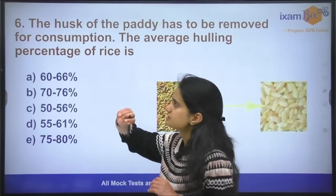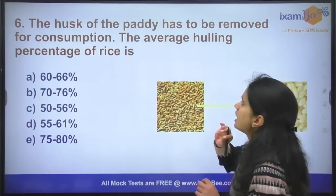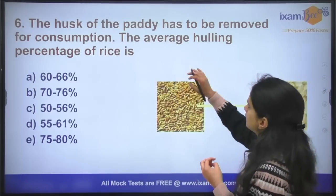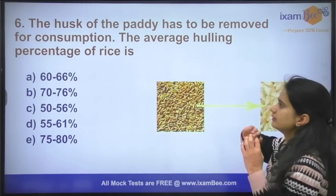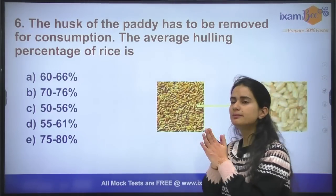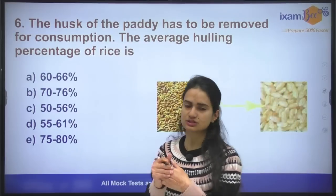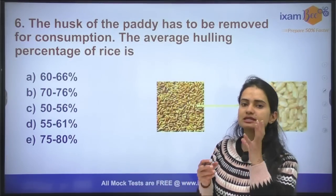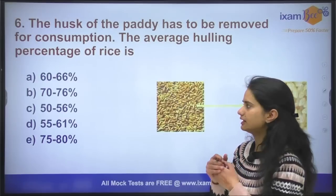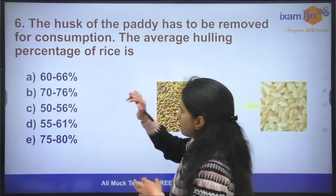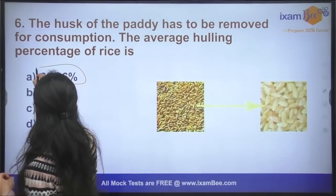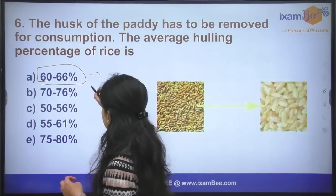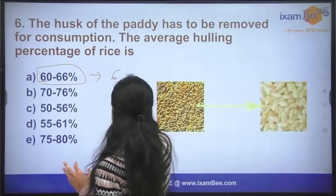Question number six: what is the average grain percentage in paddy husk? Basically, the grain content is around 60 to 66%, specifically around 66%.